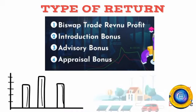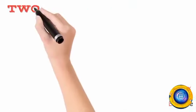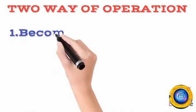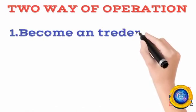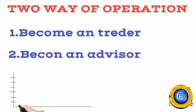Two ways of operation - this company income is two ways: first, become a trader, and second, become an advisor. Two types of income opportunity to divide in your life income plan.